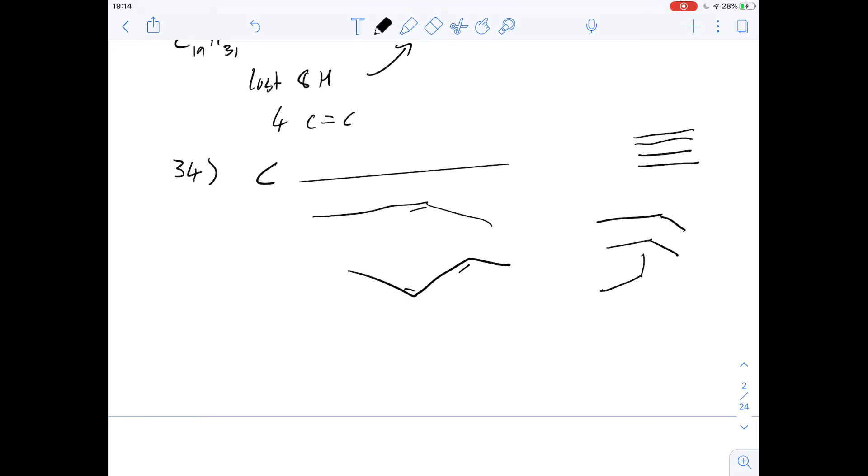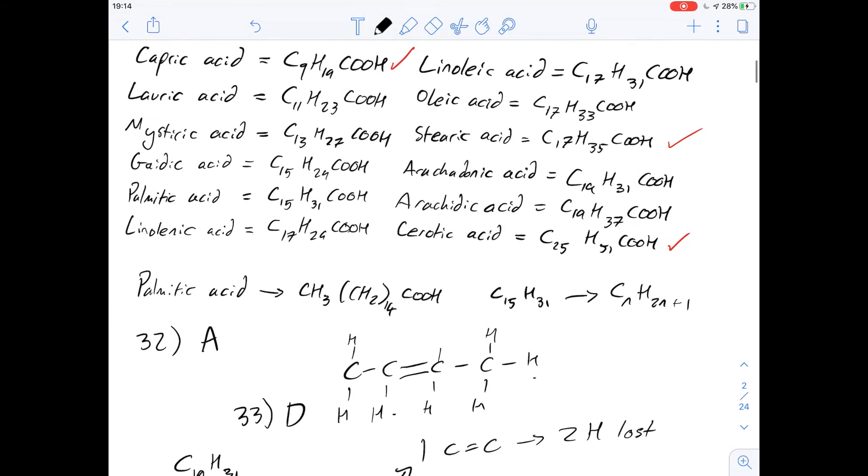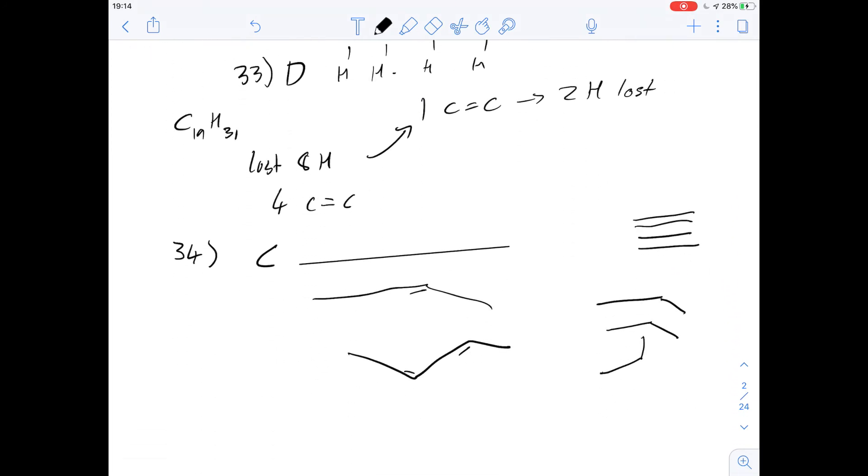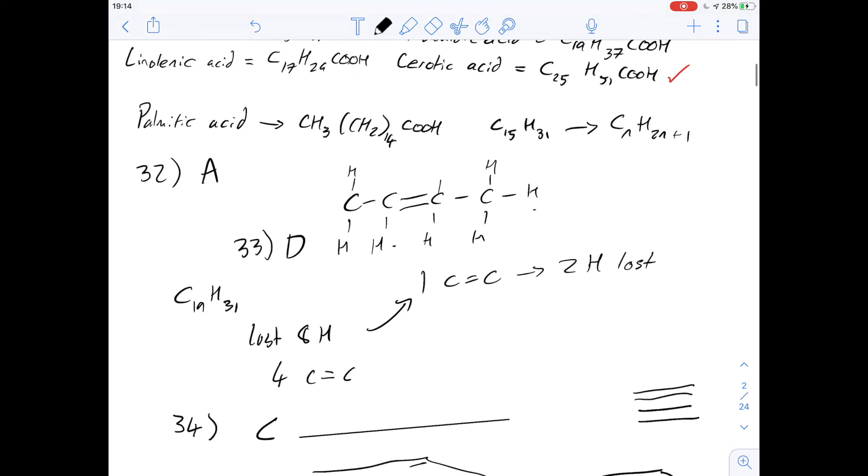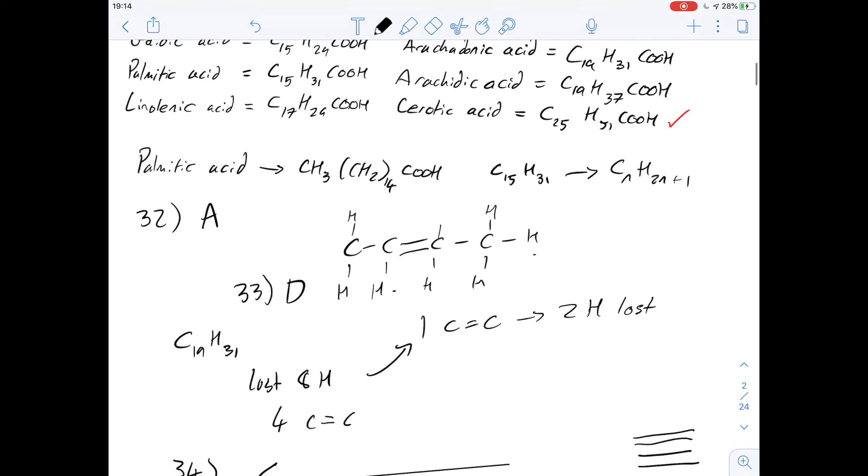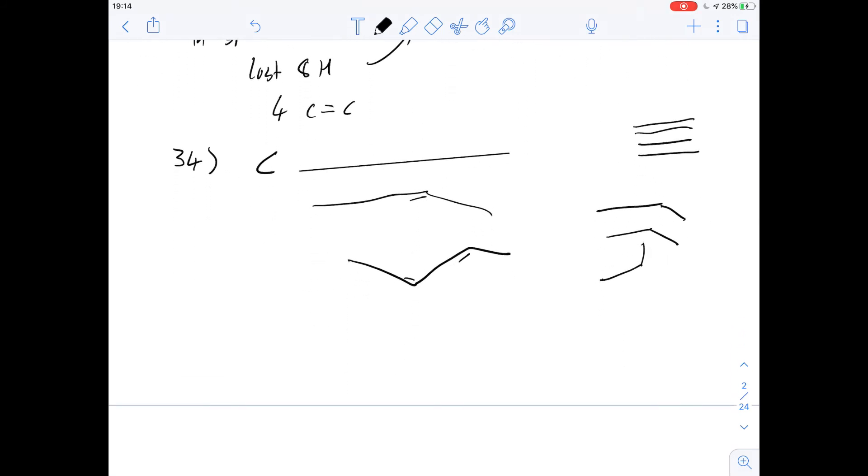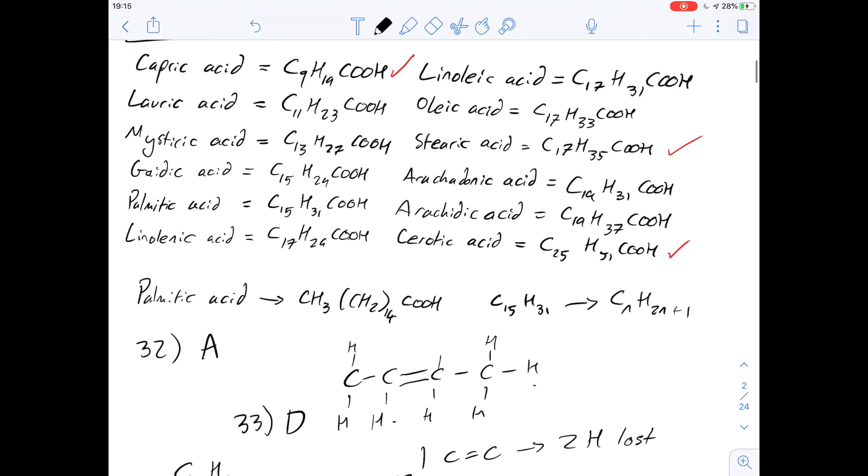So we have three options here. Capric acid, which is the one at the top here, we've already said is saturated, so it has zero carbon-carbon double bonds, so we can rule out A and C because we know it will have the least. Then what about gaidic acid and arachidonic acid? Well, arachidonic acid we know has four carbon-carbon double bonds, and capric has zero.